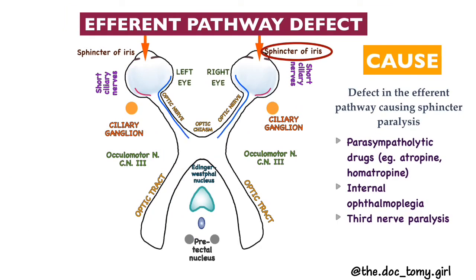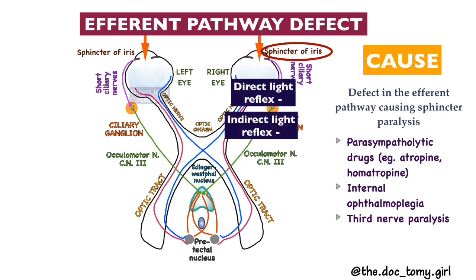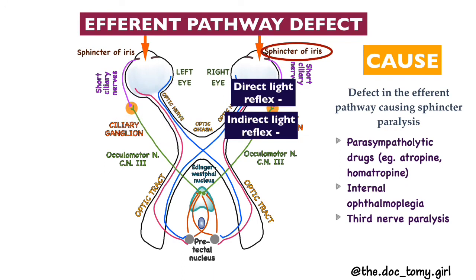The third defect is the efferent pathway defect. As the name suggests, there is a defect in the efferent pathway of the light reflex causing sphincter paralysis. On the affected side, both the direct and the indirect light reflex will be absent, whereas on the normal side, both will be present. The efferent pathway defect can be caused by the use of certain parasympatholytic drugs like atropine and homatropine. It may also be due to internal ophthalmoplegia or third nerve paralysis.